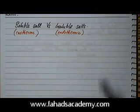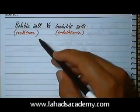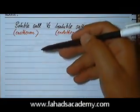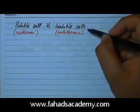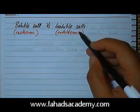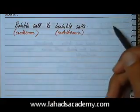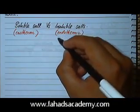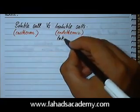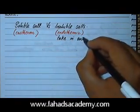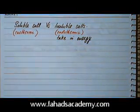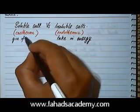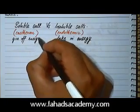Now there are some salts which we consider soluble and others which we consider insoluble. One way to identify which salts are soluble is that dissolving them is an exothermic process — heat energy is released when they dissolve. On the other hand, insoluble salts require an endothermic process — you need to stir a lot, heat it, and give it energy before the salt dissolves. Soluble salts generally give off energy when dissolving; insoluble salts generally take in energy.